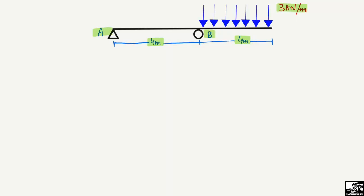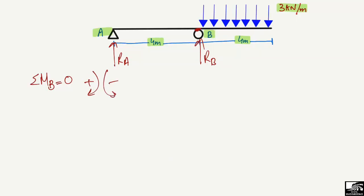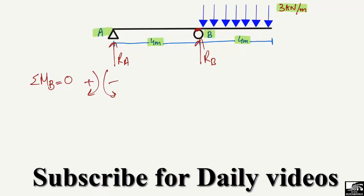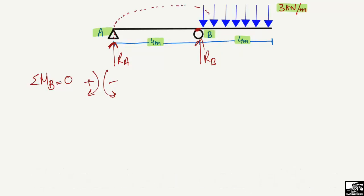First we need to find the support reactions RA and RB before we can draw the shear force and bending moment diagram. To find the support reactions, we use the summation of moments at point B equal to zero. Clockwise moment is assumed positive and anti-clockwise is negative. We take out each force that creates a moment about point B — RA is acting upward, so it creates a clockwise moment about B, which is positive.